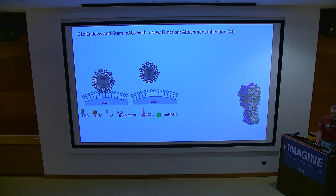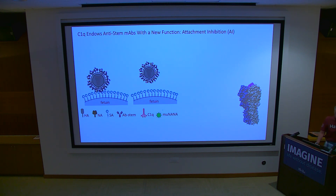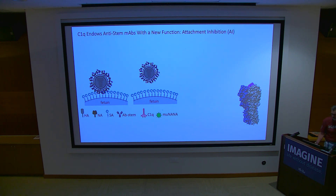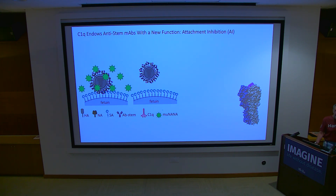Yvonne read these papers and asked: what happens with a stem antibody? In the assay, you take a highly sialylated protein called fetuin, bind it to plastic, the virion binds to it, and you detect virion binding just by its neuraminidase activity. Flu has a self-reporting protein — you add the substrate, it fluoresces.